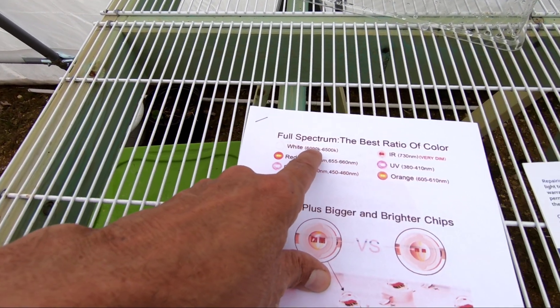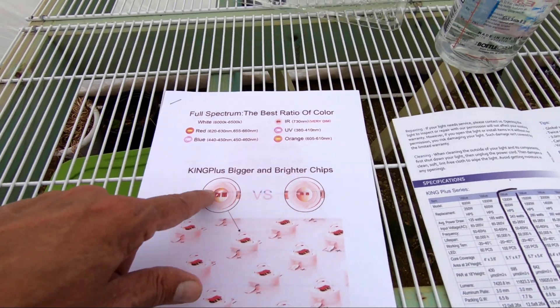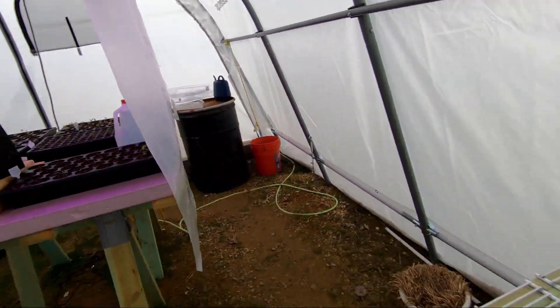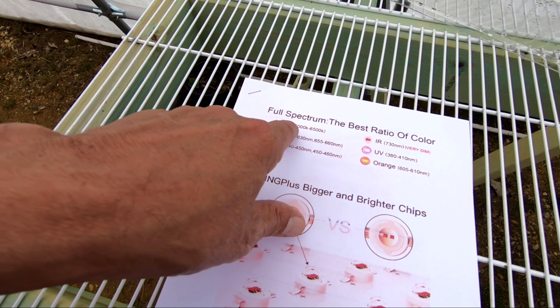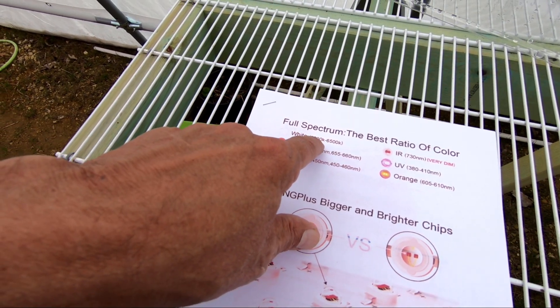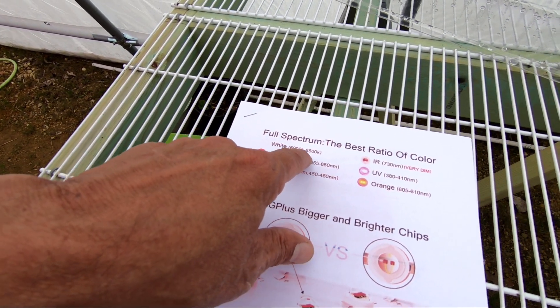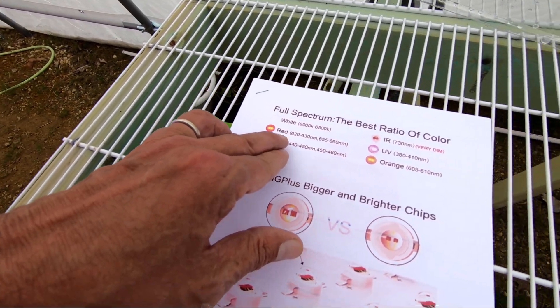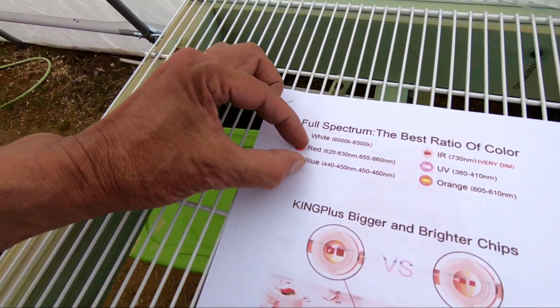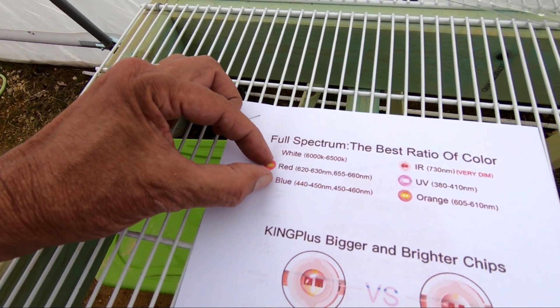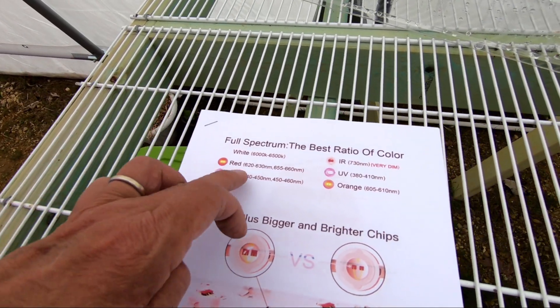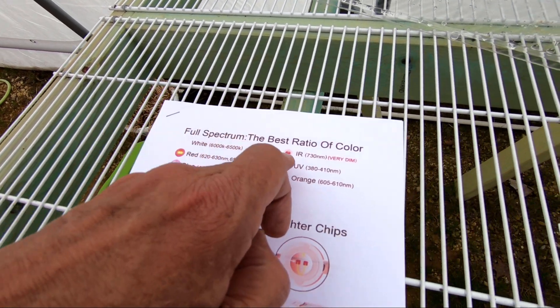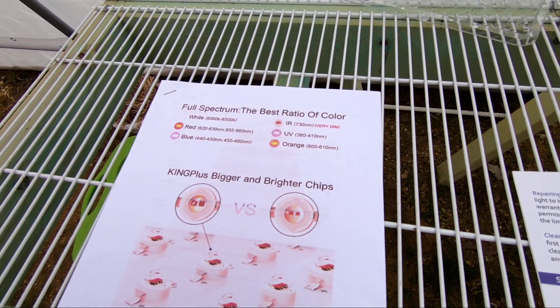Fluorescent lights are basically red and blue. This is the spectrum of these particular lights. It has white infrared, which is 6,000 to 6,500 K. It has red, blue, which is what your fluorescent bulbs would give you. This includes white, infrared, ultraviolet, and orange.